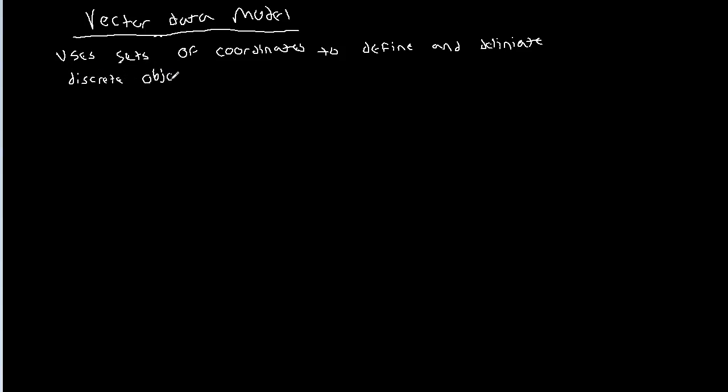So what I want to talk about now is this idea of the vector data model. We've already kind of touched on this but the vector data model uses sets of coordinates to define and delineate discrete objects.